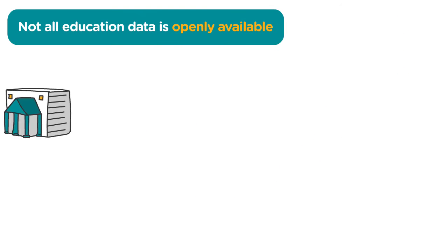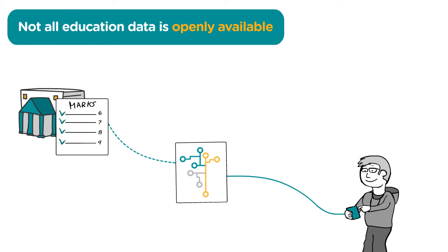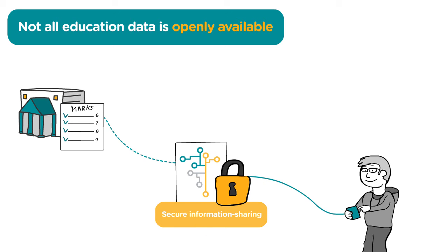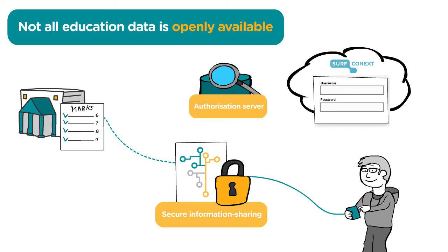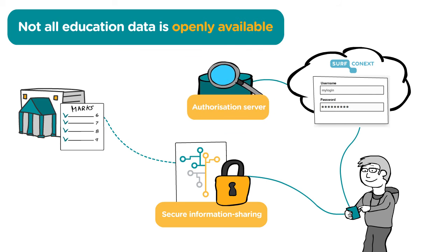Of course, not all education data is openly available, such as exam results. To ensure secure information sharing, the Open Education API relies on SurfConnext and an authorization server. Students who want to see their exam results, for example, have to log into SurfConnext first. The authorization server then determines whether they are allowed to access the data.